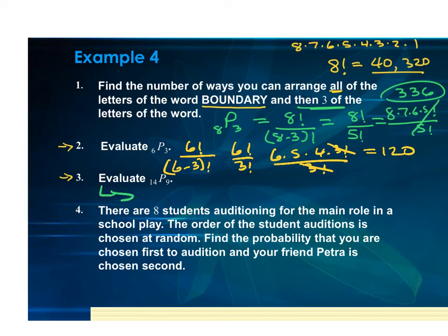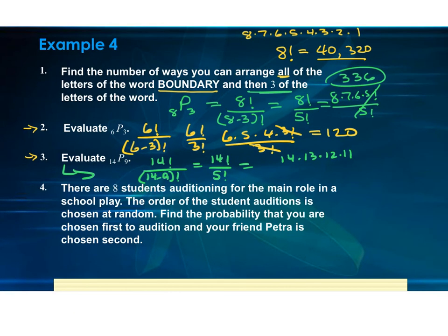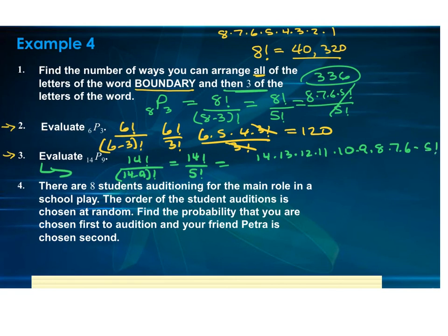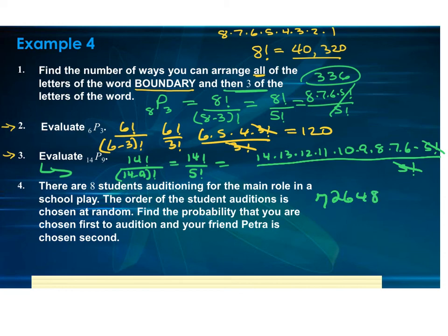For P(14,9): 14 factorial over (14 minus 9) factorial, which is 14 factorial over 5 factorial. Expanding the numerator: 14 times 13 times 12 times 11 times 10 times 9 times 8 times 7 times 6, then stop — the five factorials cancel. Multiplying those gives 726,485,760.